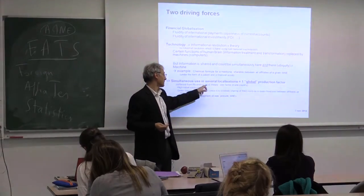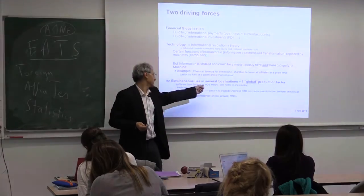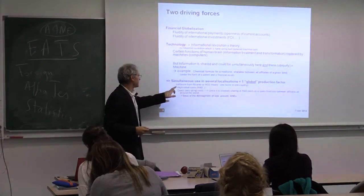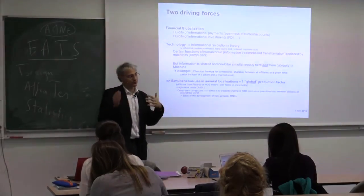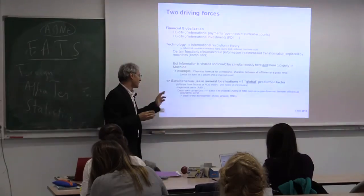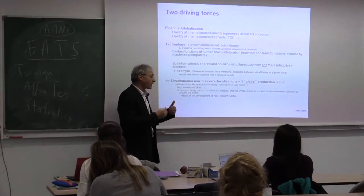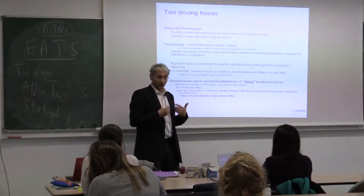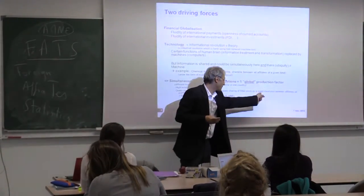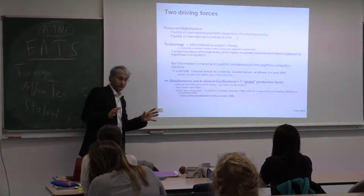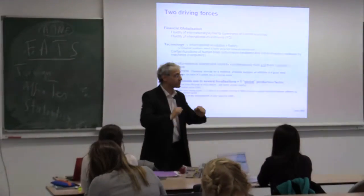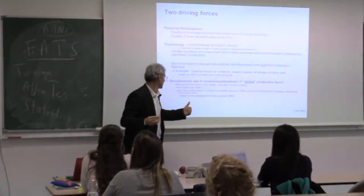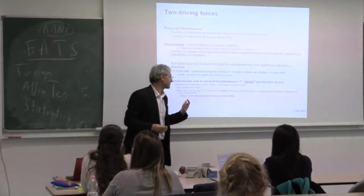This is very different from Ricardo or Heckscher-Ohlin-Samuelson theory, because in that theory you have one factor in one country. For information, there are high initial costs like R&D and quasi-zero usage costs. Once created, the sharing of R&D costs can be made as a sharing of quasi-fixed costs between affiliates all around the world. So it is a driving force for the development of multinationals as a network — a bigger and bigger network to share a fixed cost.